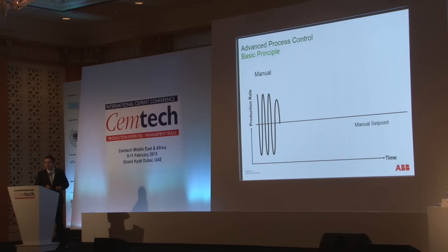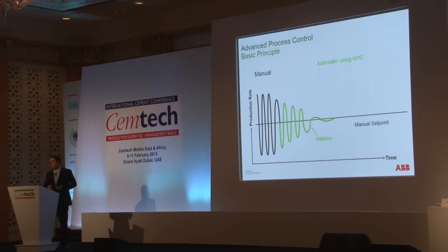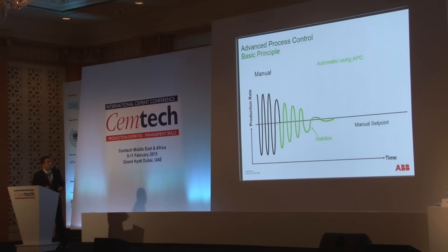So we will go from manual operation, where we all know that we have a normal fluctuation of the process. Our main goal is to eliminate or minimize the manual fluctuation in the process. First of all, we stabilize the process, because you cannot optimize something that is not stable. So first of all, you have to make the process as stable as possible. Afterwards, we can optimize.